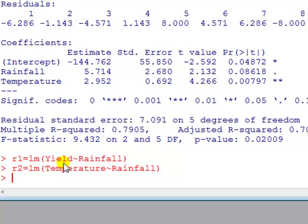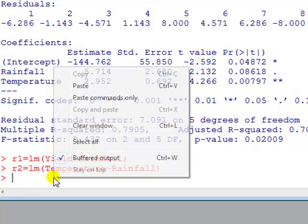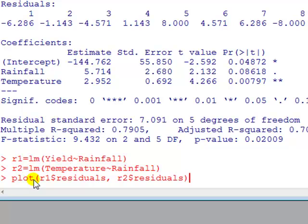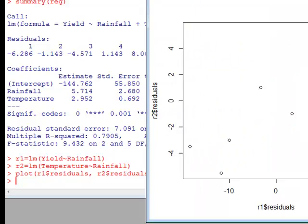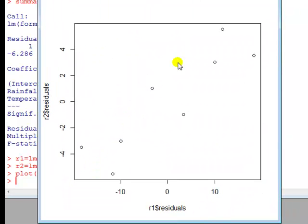Alright, so I've regressed yield on rainfall, I call that R1, temperature on rainfall, so this is the one IV on another IV, and that's R2. If we plot the residuals resulting from one regression on another regression, we do it like so, this says plot from the object called R1, in that object, that's dollar sign, the residuals, so residuals of the regression R1, and the residuals of regression of R2, we get such a plot, so it looks like it's a positive correlation here.